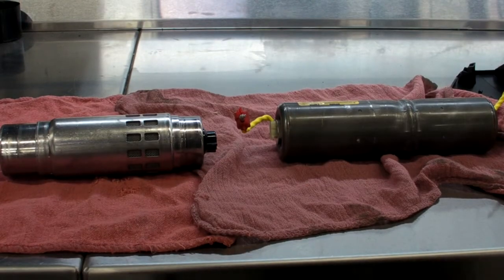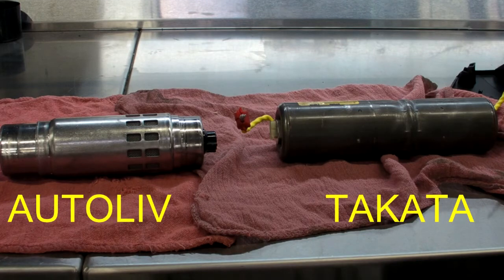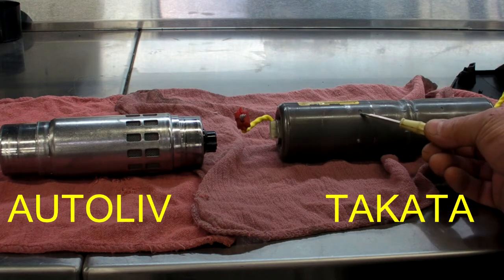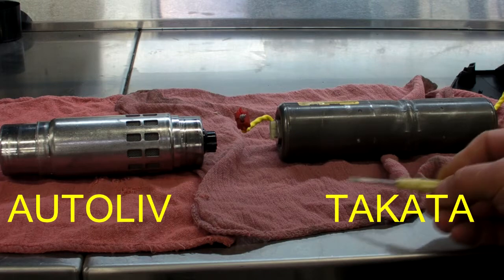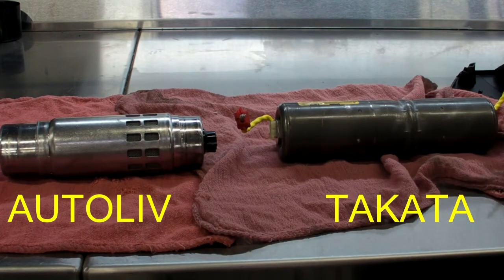We have the two units side by side now. The old Takata unit has very tiny gas discharge holes in it. With the propellant being corrupted, I guess that's why it builds up so much pressure. The new unit is an Autoliv unit, much bigger discharge holes.